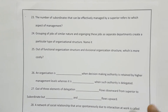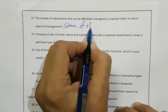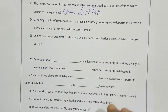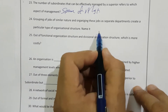Question 23: The number of subordinates that can be effectively managed by a superior refers to which aspect of management? Obviously this is span of management. Next, grouping jobs of similar nature and organizing these jobs as a separate department creates a particular type of organizational structure — name it. It is functional structure.